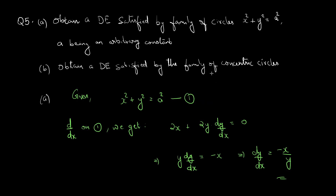For a family of concentric circles, the center is constant — it's not changing. So in that equation, the center point will not be a parameter. To form the family of concentric circles, we just assume the center as any point. For a simpler equation, we can take the center as the origin, zero zero.